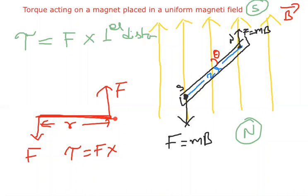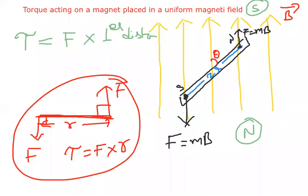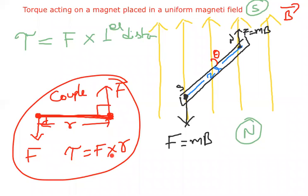The perpendicular distance between the forces I can write as R. So tau equals F into R. When two opposite and equal forces act at different points, they try to rotate the body. The torque acting is force into perpendicular distance.